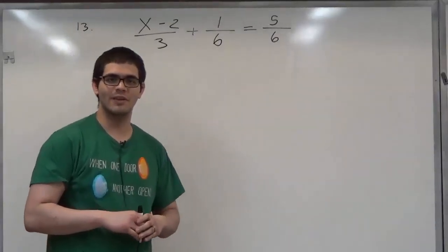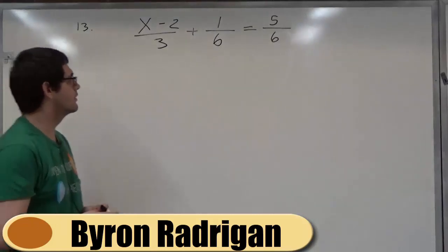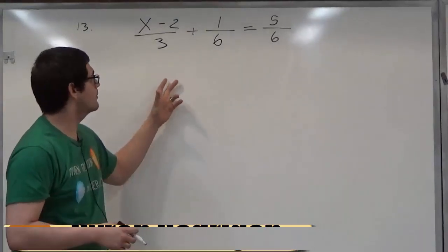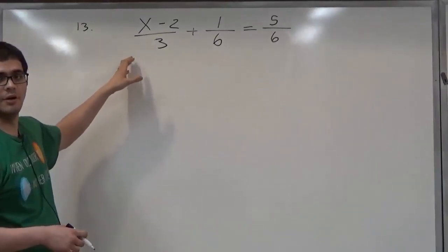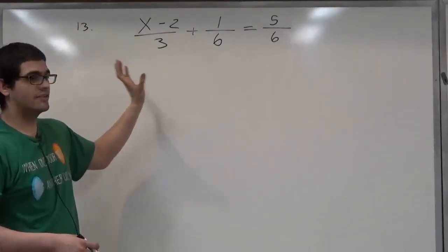Hello, welcome to HelpYourMath.com. Today we'll be working on number 13 of the CUNY Form D exam. We're going to start this problem by finding the least common multiple of these three fractions in order to simplify the problem.